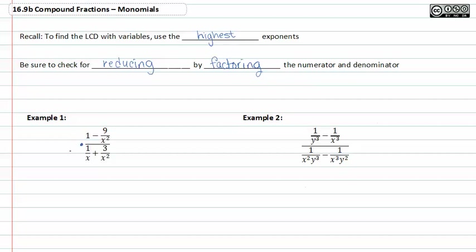We've got an x squared, which is the highest power of exponents in both the numerator's denominator and the denominator's denominator. So we're going to multiply by x squared over one, divided by x squared over one, to clear the fractional numerator and denominator.